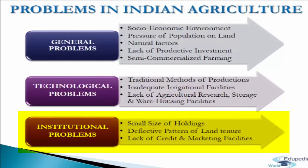In this system, it is difficult to increase productivity through technological means alone. In fact, land reforms should precede technological changes. The next problem is lack of credit and marketing facilities. Due to lack of credit and marketing facilities, cultivators are not able to invest the required resources in agriculture, and consequently the level of productivity per land and per capita is very low. If these facilities are provided, productivity can undoubtedly be enhanced.